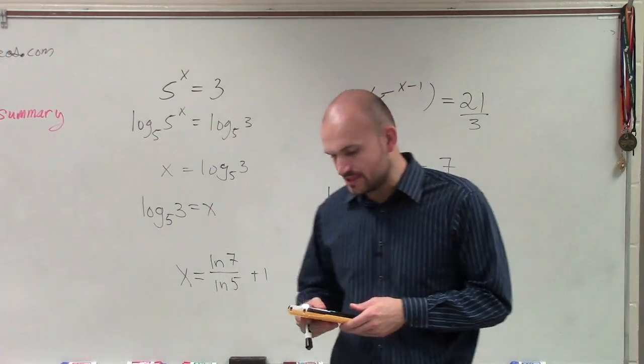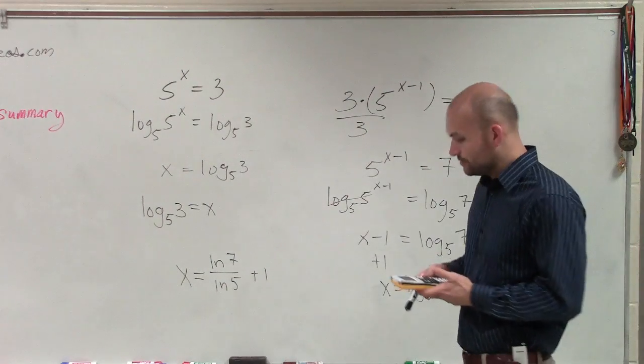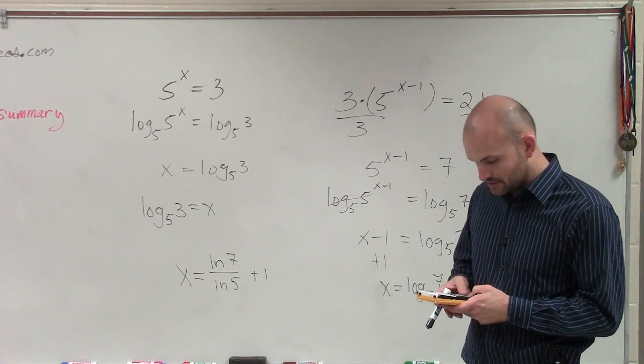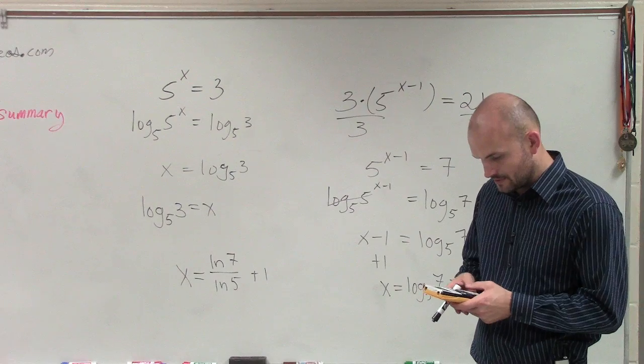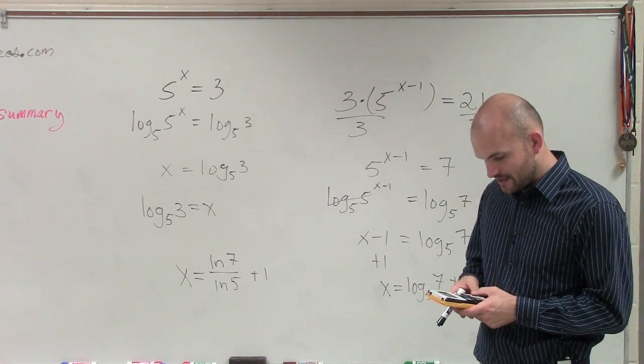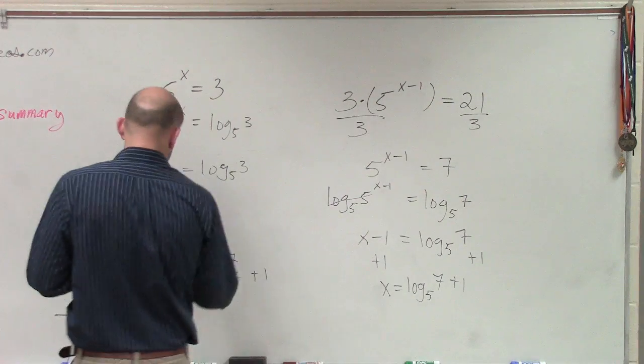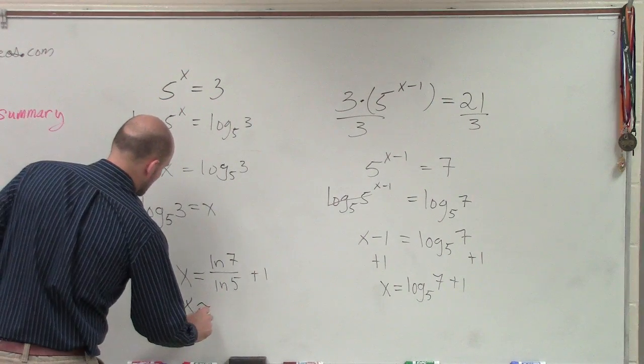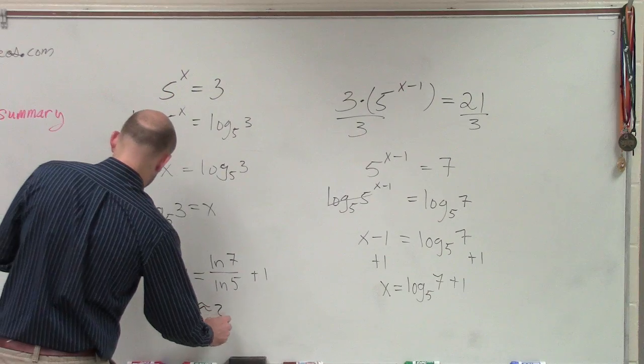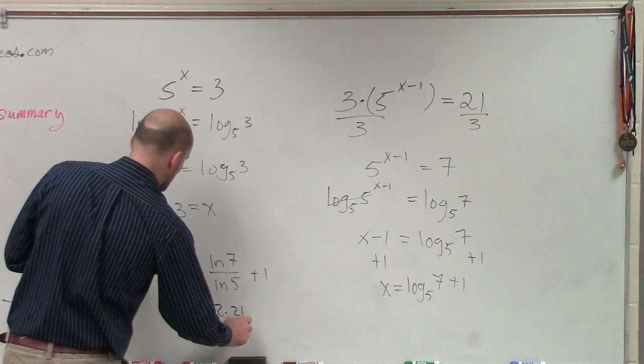Or you can use natural logarithm. It really doesn't matter what the base is that you use. So to go and figure this out, I'll just do ln of 7 divided by ln of 5 plus 1. So therefore, x equals approximately 2.21.